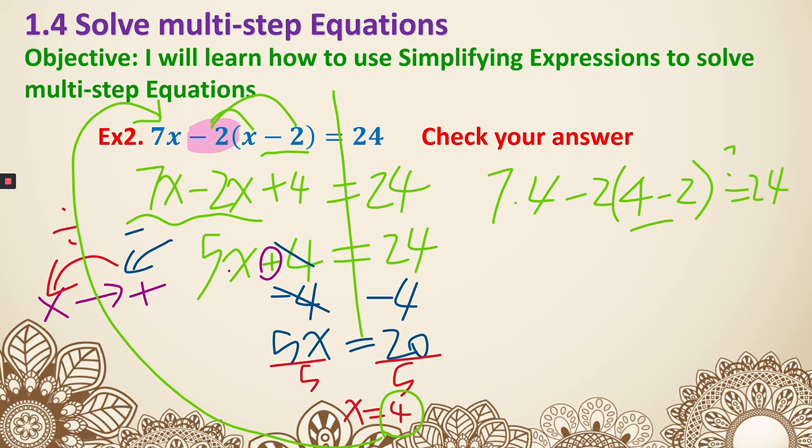4 minus 2 is 2. So I have 7 times 4 minus 2 times 2. We're trying to see if it equals 24. 7 times 4 is 28. 2 times 2 is 4. It does actually equal 24. That means we've got it right.